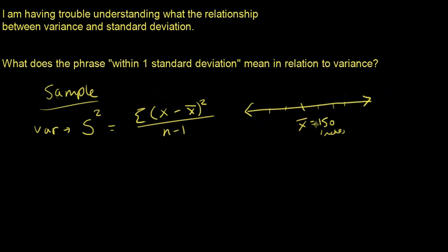Variance is a measure of the spread of the data. For each data point, we measure the difference between that point and the mean — that's the X minus X-bar term — which gives us an idea of how spread out the data is. We square it because we don't care whether the data is above or below the mean; we only care about how far away it is, so squaring eliminates the negative sign.